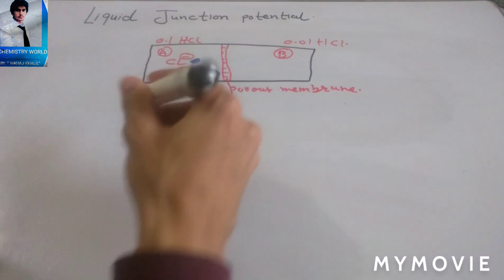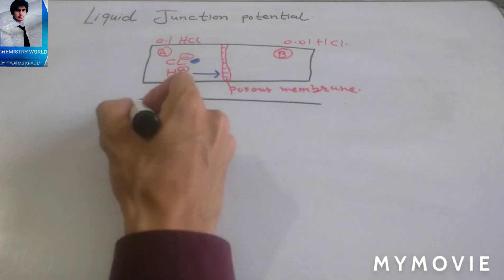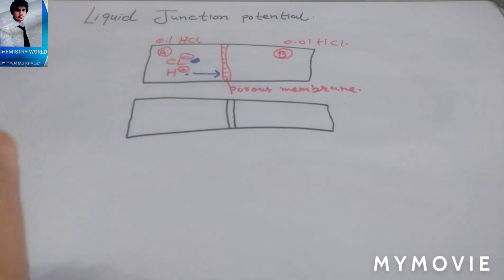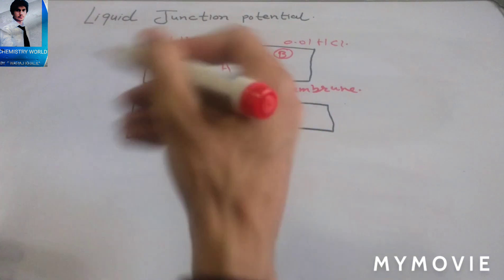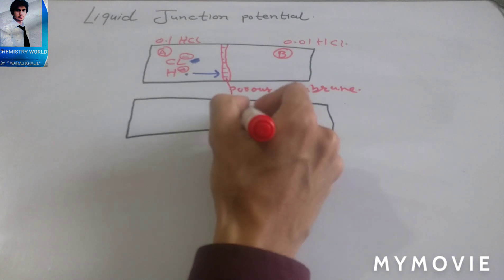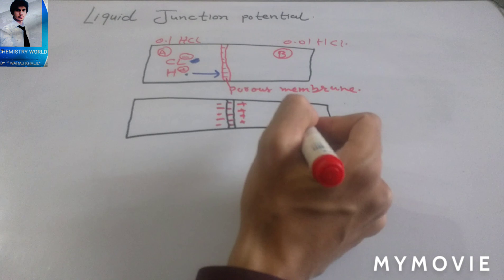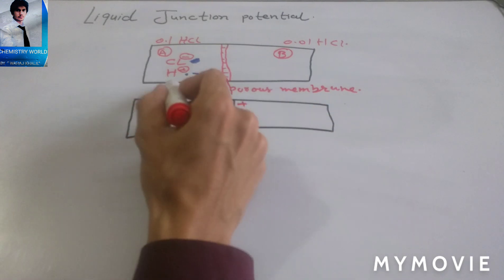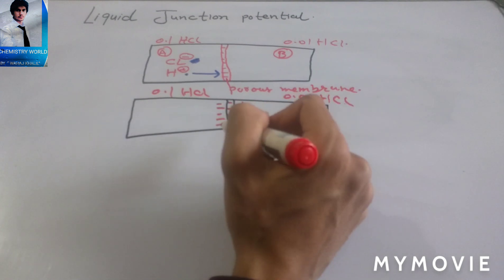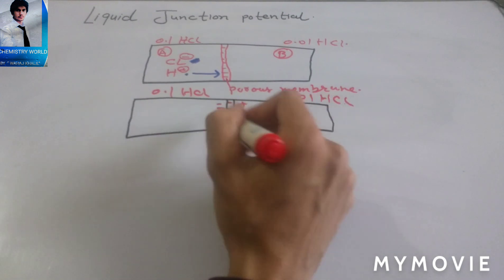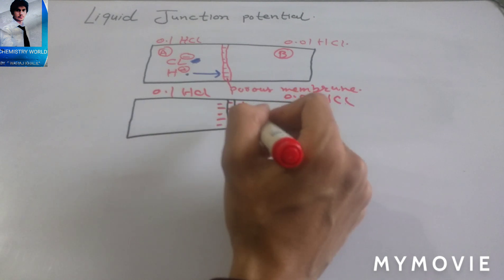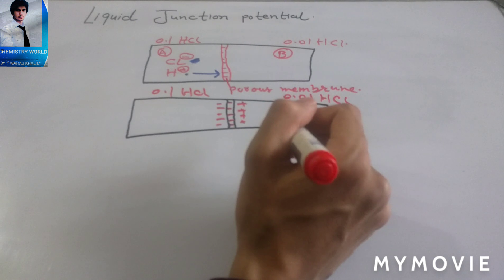At the porous membrane, we have negative ions on one side and positive ions on the other side. Because of the movement of H⁺ from chamber A to chamber B, a double charge layer forms at this junction point, and it is termed as liquid junction potential.